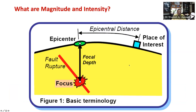Let's look at this figure. The point on the fault where slip starts is called the focus or hypocenter of the earthquake. In the earlier tip, I mentioned that earthquakes generate due to sudden slip at a fault, releasing large amounts of elastic strain energy. The point vertically above this focus or hypocenter on the earth's surface is called the epicenter.